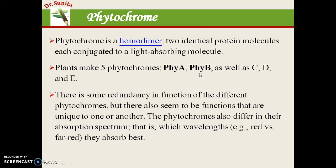These phytochromes differ from each other because their absorption spectra are different. For example, phytochrome A has a different absorption spectrum from phytochrome B. Some phytochromes absorb red light, while others best absorb far-red light.